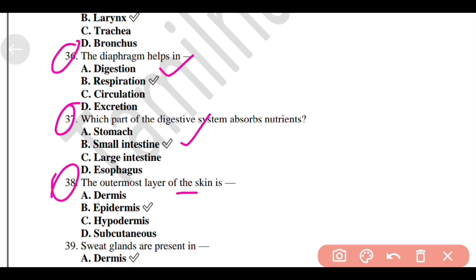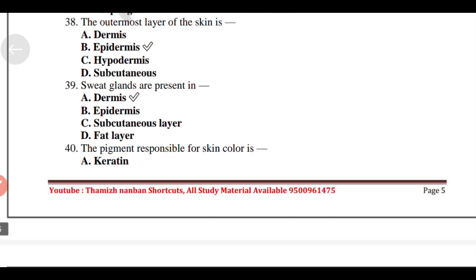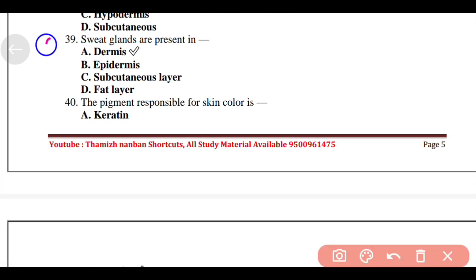The outermost layer of the skin is Option B, Epidermis. Sweat glands are present in Option A, Dermis.